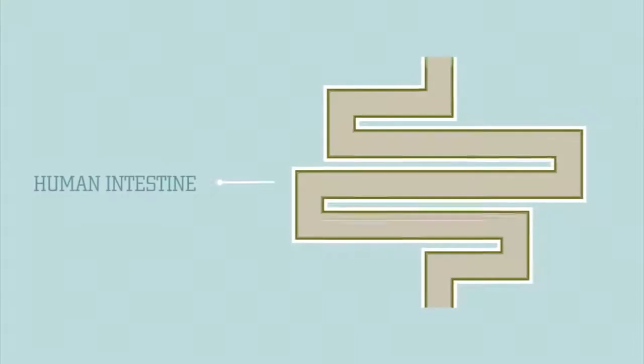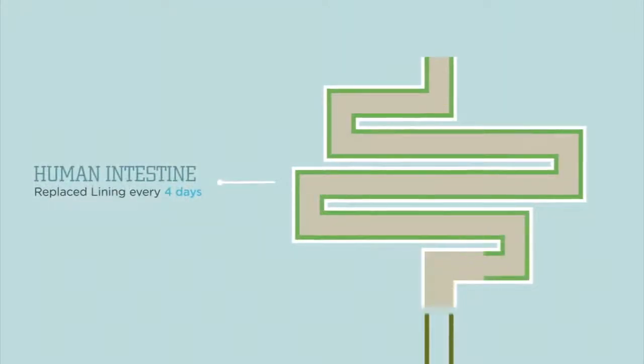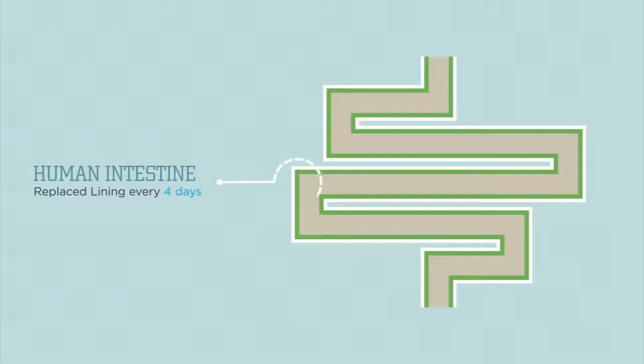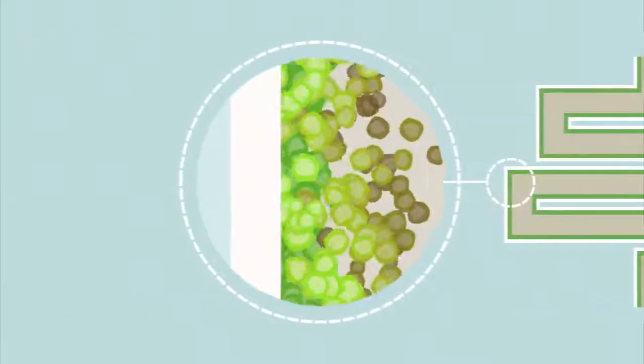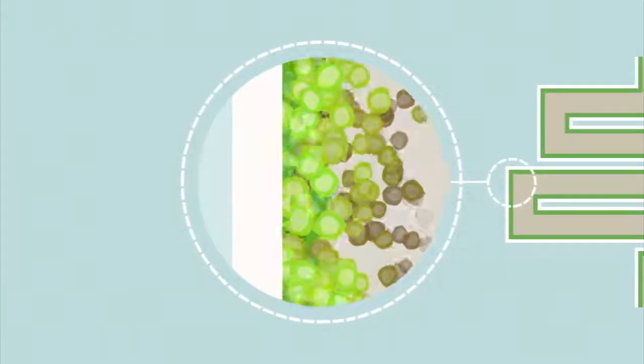Your body uses stem cells to replace worn-out cells when they die. For example, you completely replace the lining of your intestines every four days. Stem cells beneath the lining of your intestines replace these cells as they wear out.